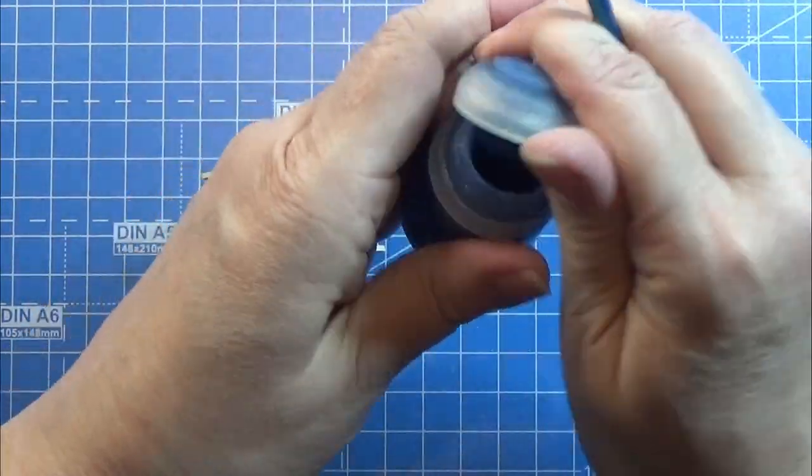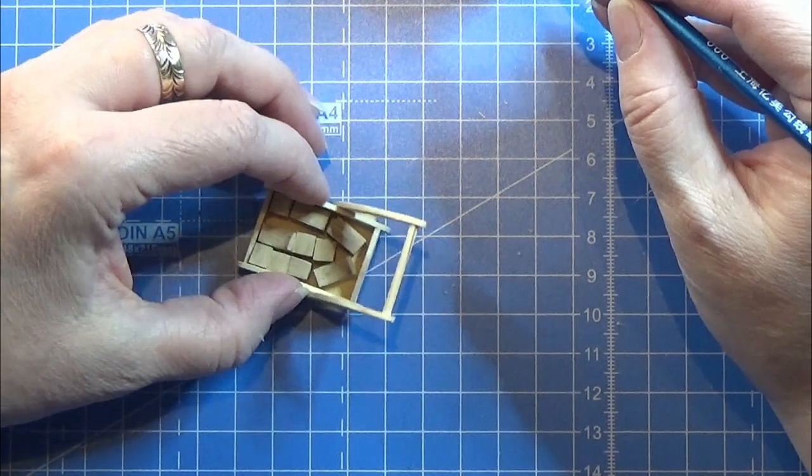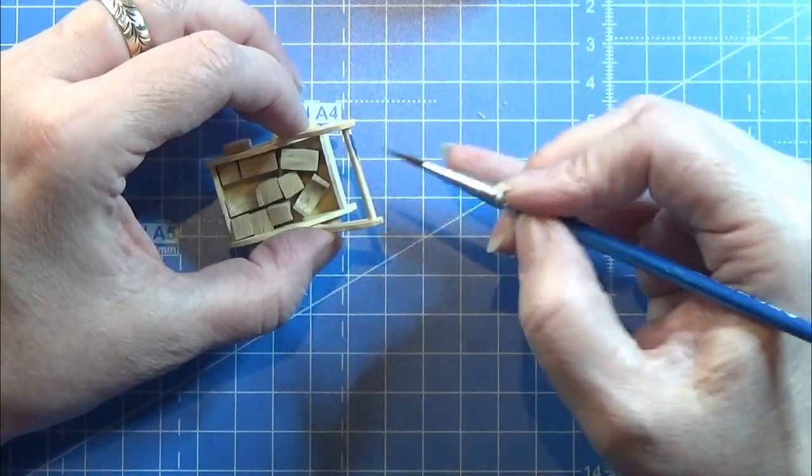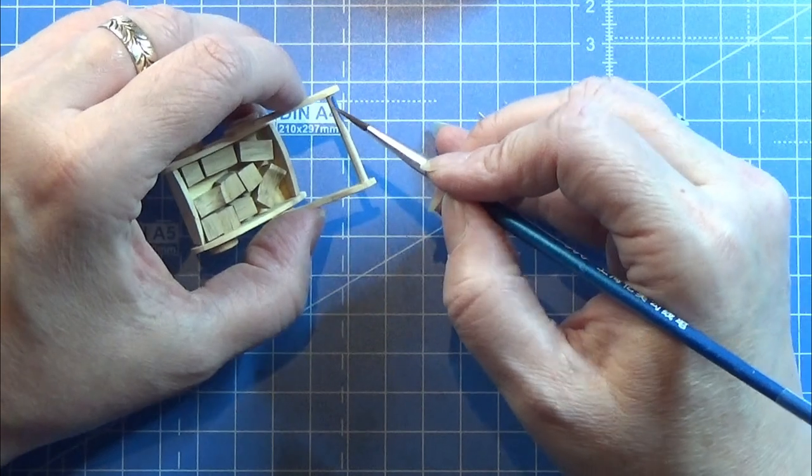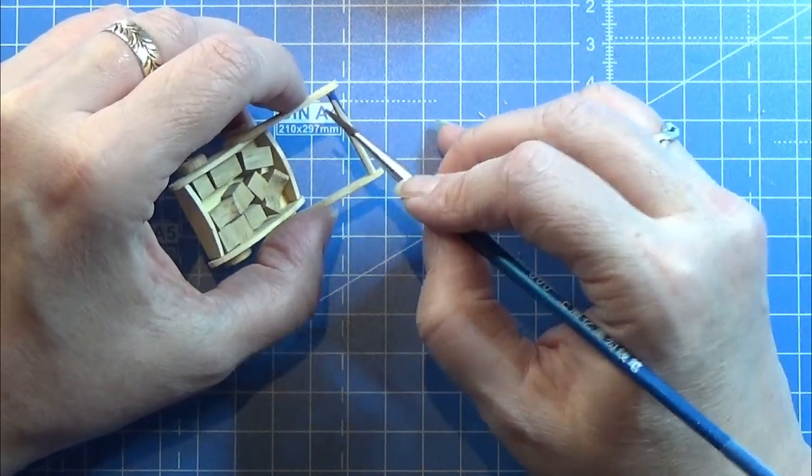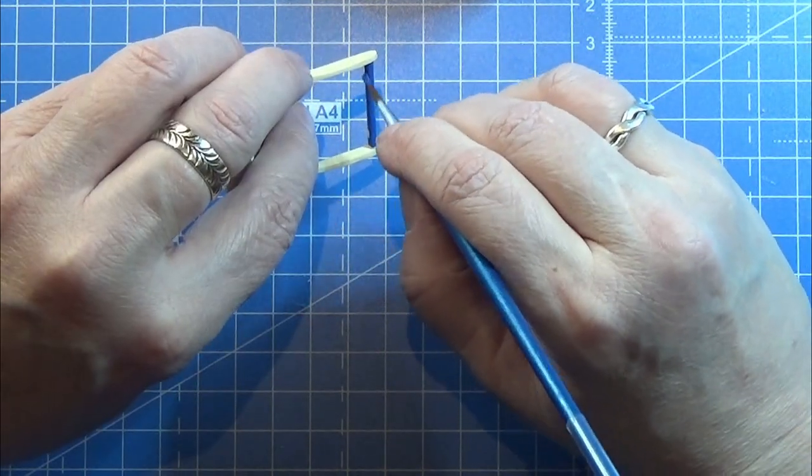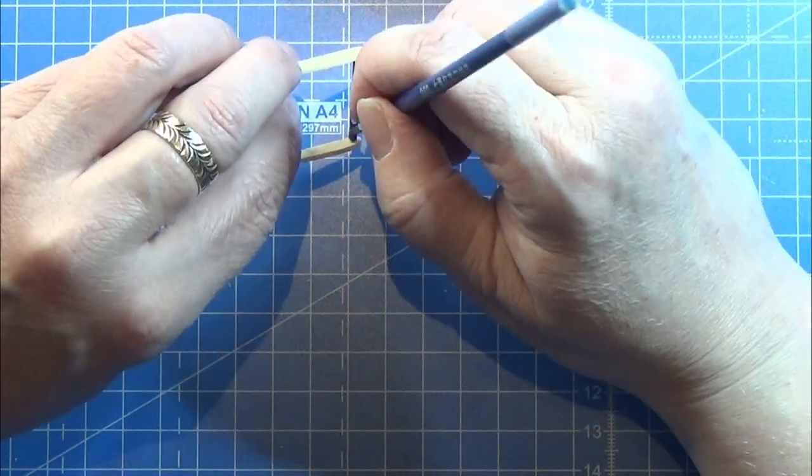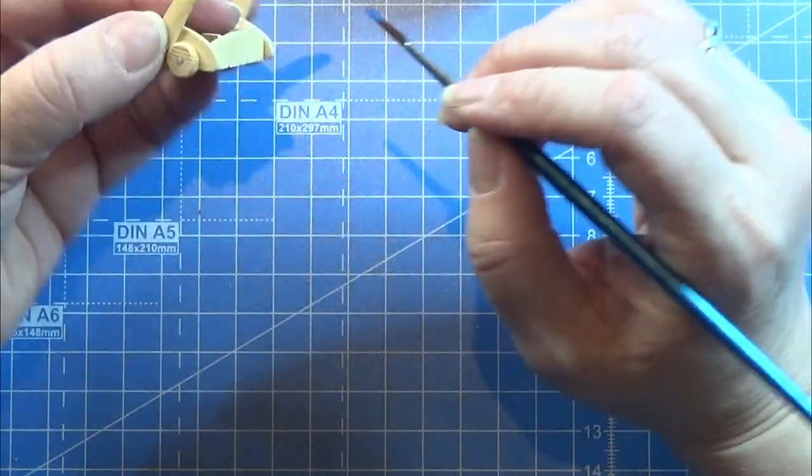Then I used some blue citadel paint to paint the handle here on the wagon. You can paint the blocks or the rest of the wagon if you want to. I just like the wood color on this little toy so I'm keeping it like that. Just painting the handle.